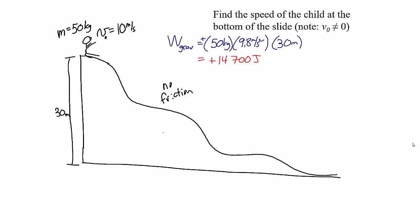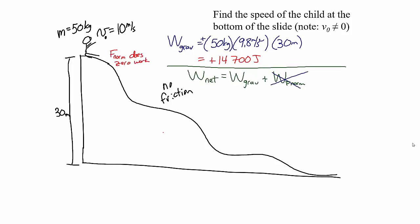The only other force acting on the child as he slides down is the normal force, but the normal force is perpendicular to the motion. As he slides down the slide, the normal force is always perpendicular to the direction he's moving — he's moving parallel to the slide, and the normal force is perpendicular to it. So the work done by the normal force is zero the entire time. The net work done — the work done by gravity plus the work done by the normal force — ends up being just the work done by gravity.